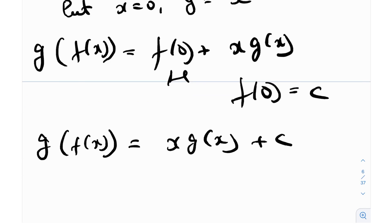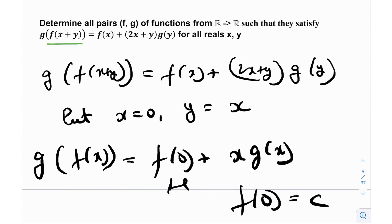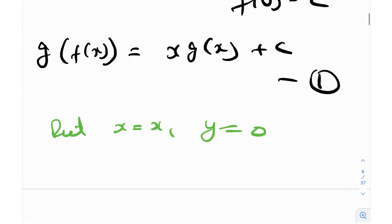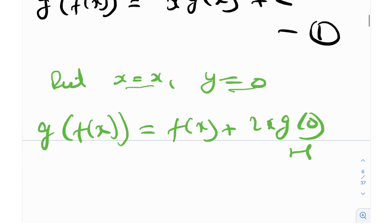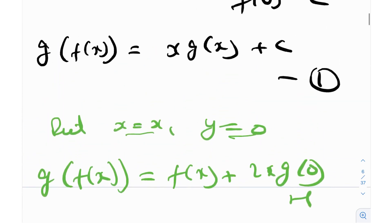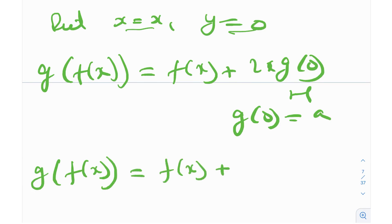Now let's plug in x equals x and y equals 0. The reason is that the left hand side will be similar — in fact, it'll be the same. So g of f(x) is equal to f(x) plus 2x times g(0). Now g(0) is a constant, so let me define g(0) as a. So g of f(x) equals f(x) plus 2ax, and that's equation number 2.